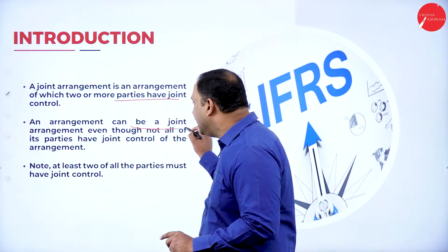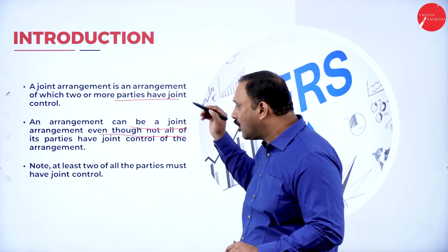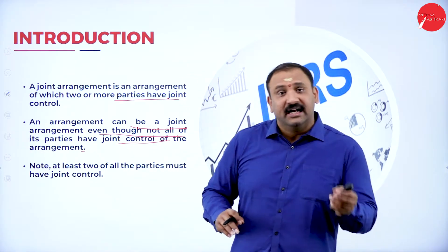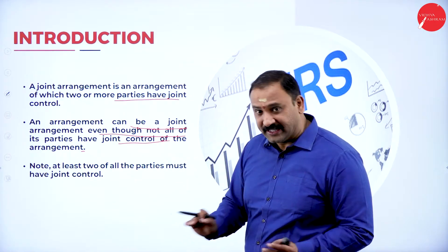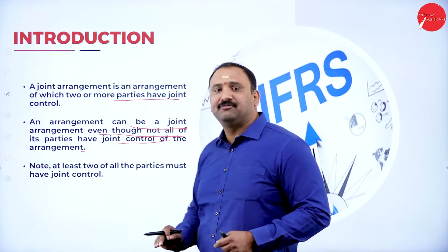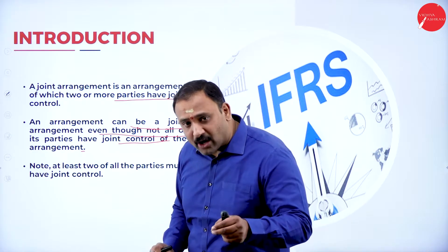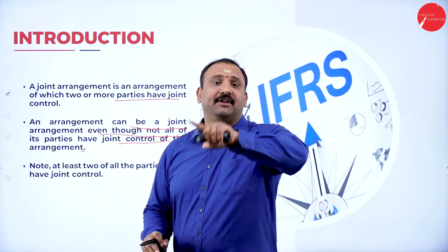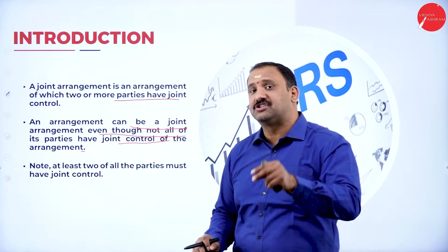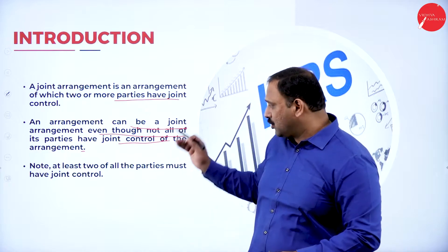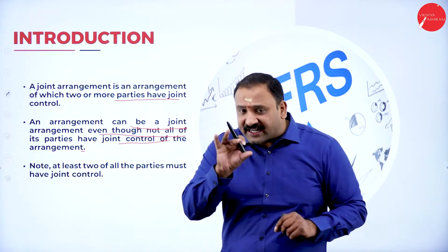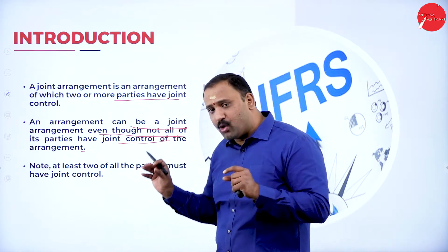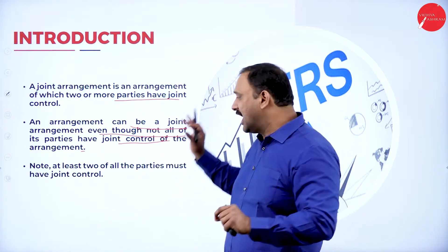An arrangement can be a joint arrangement even though not all the parties have joint control of the arrangement. Which means on paper it can still be written as a joint arrangement even though one person is still controlling it. We are approaching this from the perspective of the accounting standard, not theoretically from management control.